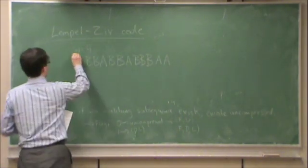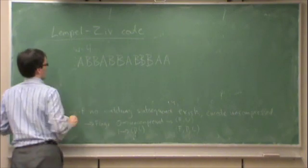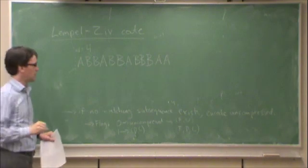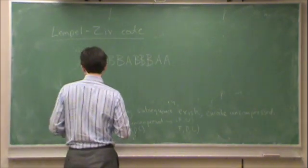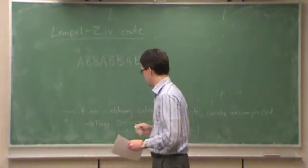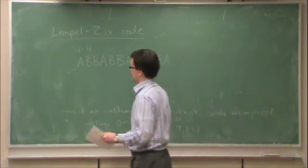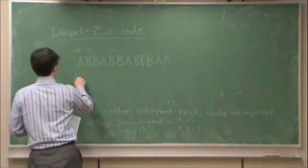So when we start out, we start out with i equals 1. There's no history, so there's nothing in history to compare to. So there's no matching subsequence. So we transmit uncompressed. And we send 0, A.